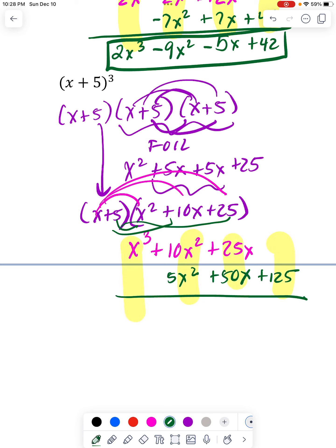And then I can look at them in these columns and say, okay, now I can combine my terms. I have an x³. Here I have 15x² and 75x's and 125.